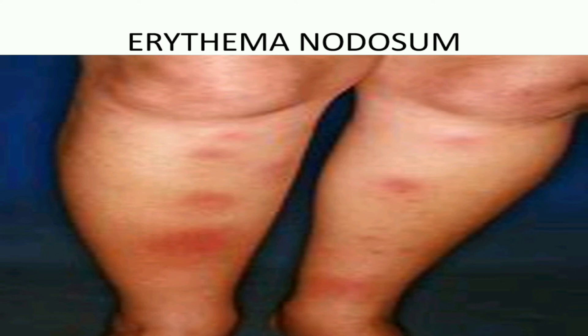The lesions usually present on the anterior leg as 2–6 cm red tender nodules with poorly defined borders. During the first week they become tense, hard, and painful. In the second week they become fluctuant and a bluish or livid appearance develops. Finally they disappear within 1–2 weeks with desquamation of the overlying skin after the primary lesion appears.